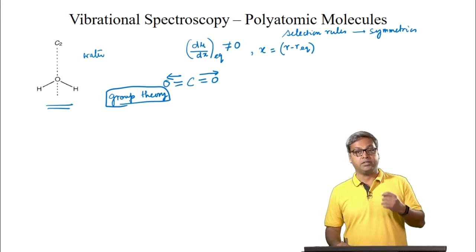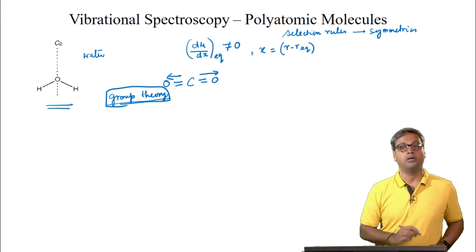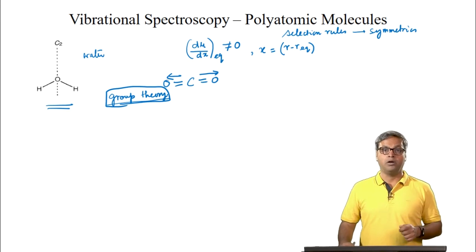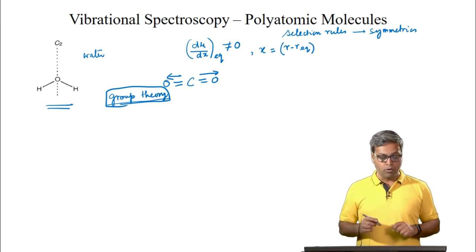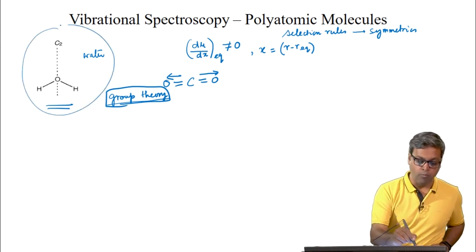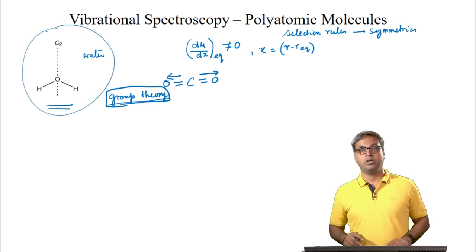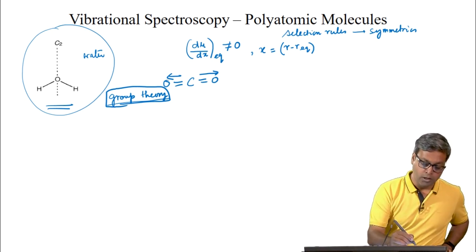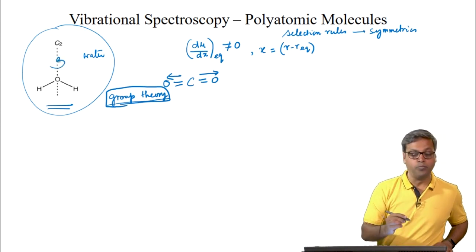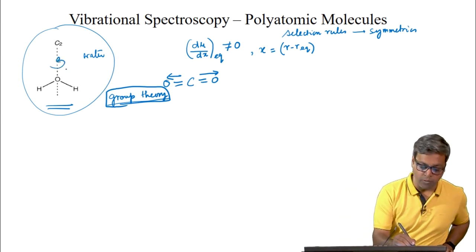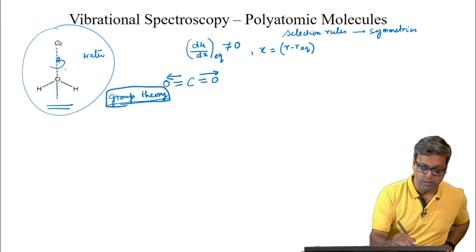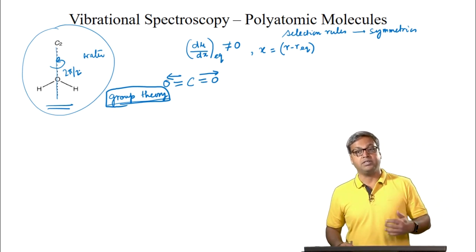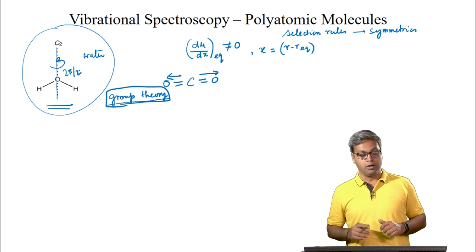We would look into the basics of group theory from a more qualitative level. We will start with the elements of symmetry. In water, the rotation of the molecule by 2π/2 radians — if you rotate this molecule along this axis by 2π/2 radians — it produces an identical configuration to the observer.